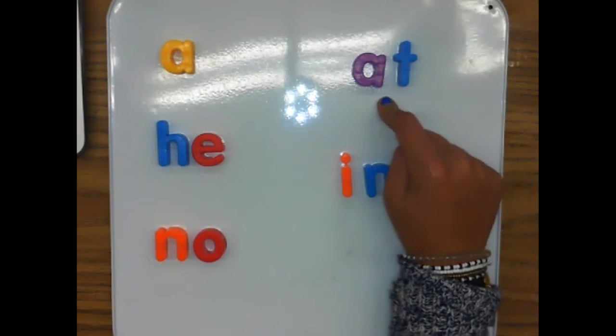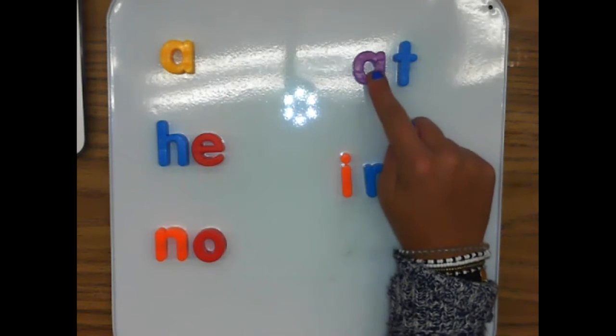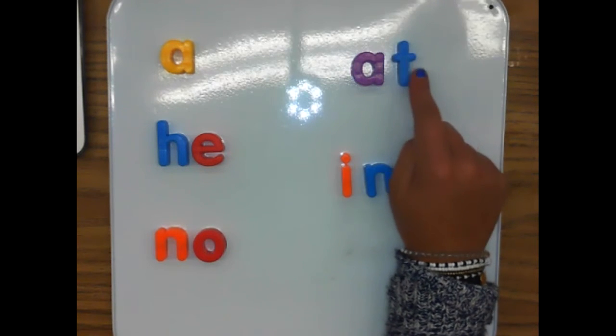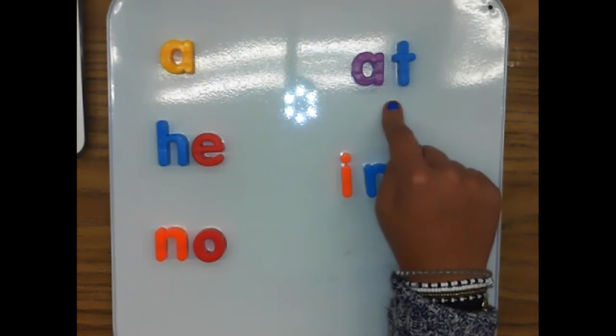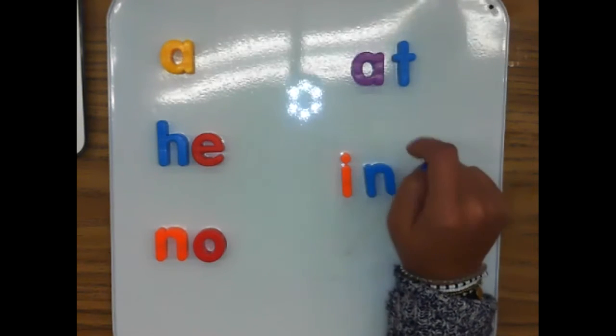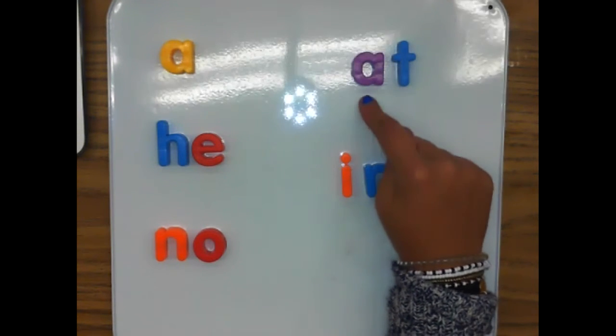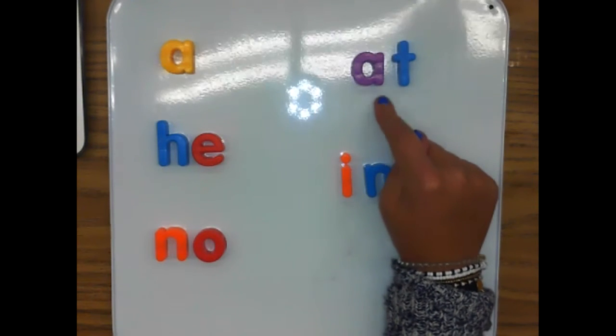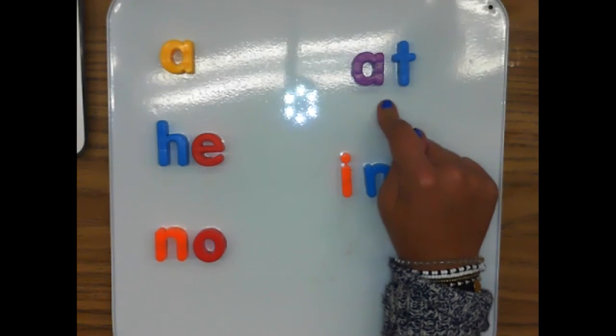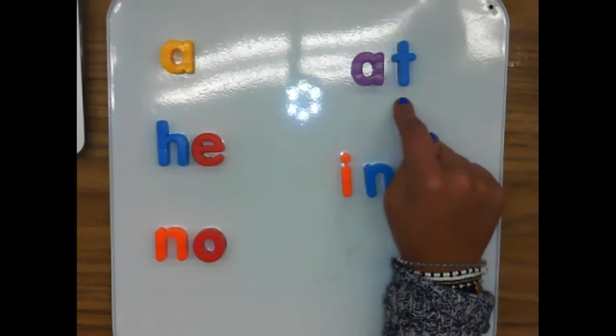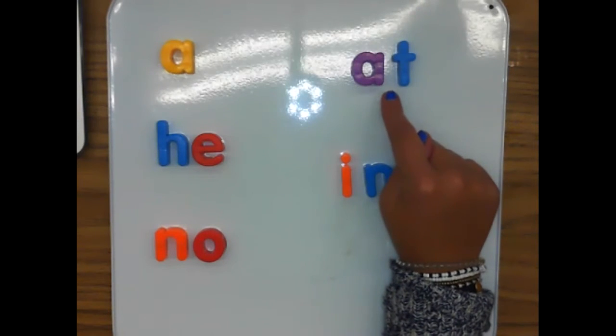This is at. Like, I am at school. Or the birthday party is at the house. At, A-T spells at, at, at. Do it with me. A-T spells at, at, at.